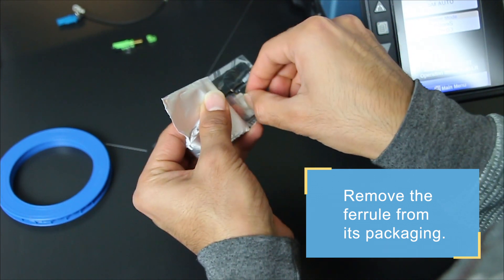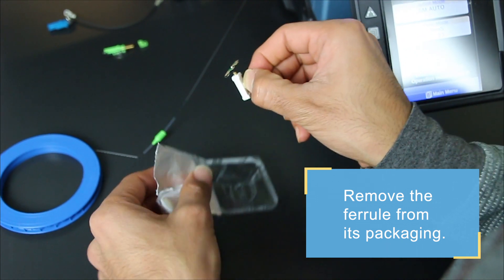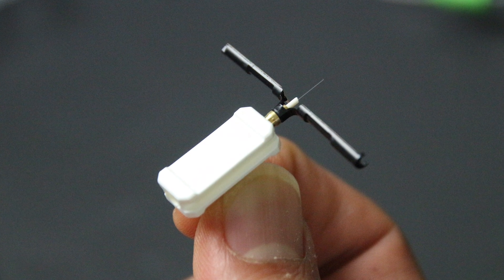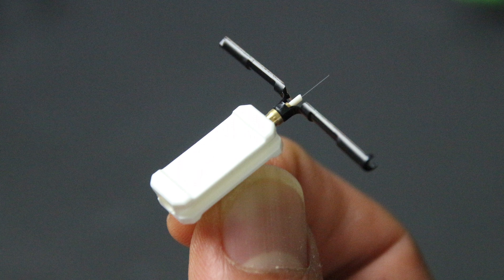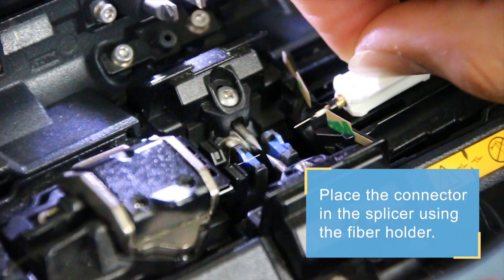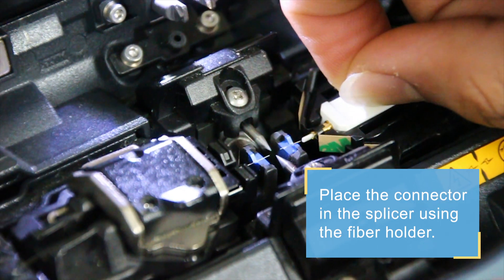Next, remove the ferrule from its packaging. Align the ferrule on the special fiber holder in the splicer by sliding the side wings into the corresponding location.